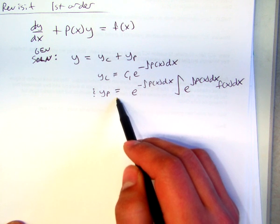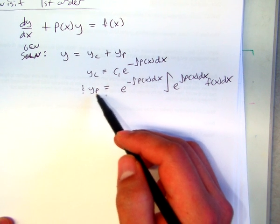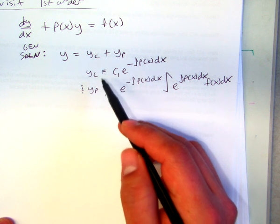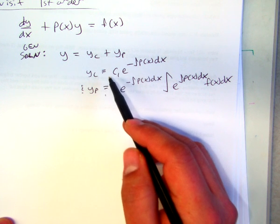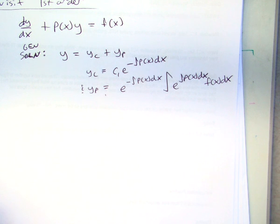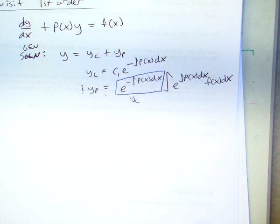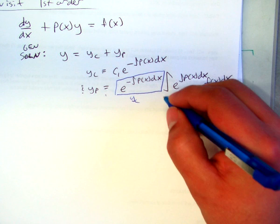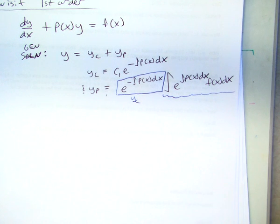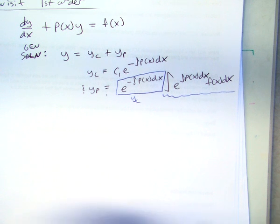The fact is that the particular solution could also be thought of as kind of a multiple of this complementary solution. Because if you look carefully, this is essentially your y sub c, your complementary function. And then here's this other goofy function, right? Well, we're going to call that u1. So maybe we can call it u. It's actually kind of like what we did earlier. Very similar to what we did when we were finding a second solution given one.